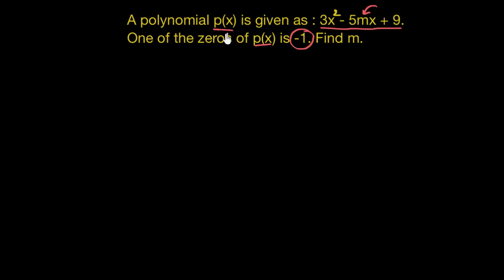And what do we mean by zeros of a polynomial? So that particular value or maybe values of x which would make the polynomial, which would make the value of polynomial equal to 0, are called as zeros of this p of x.